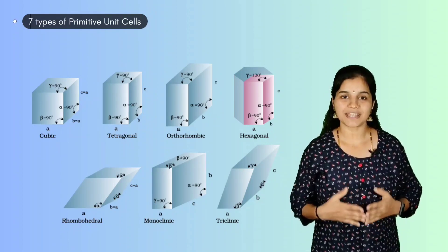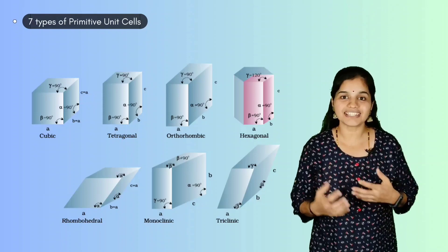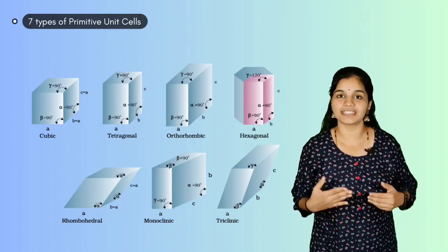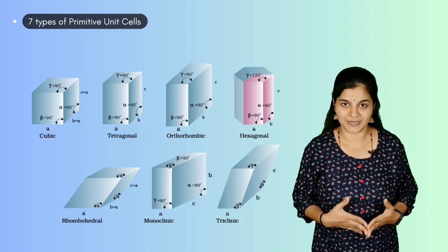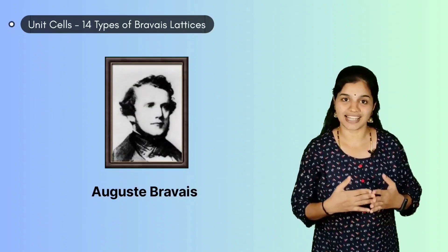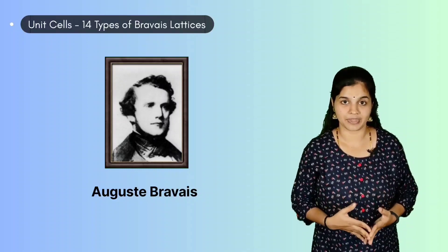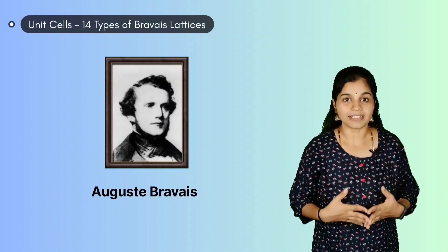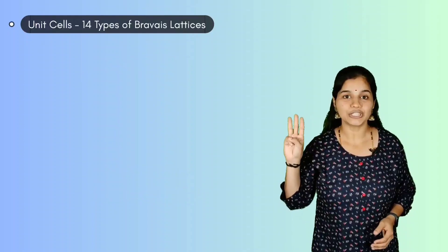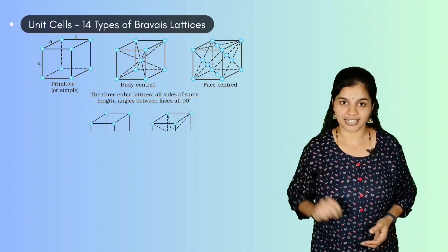These seven primitive unit cells, in combination with different centered unit cells, give us 14 different types of crystal lattices. As already mentioned, these 14 crystal lattices are called Bravais lattices. Among the 14 Bravais lattices, there are three cubic lattices and two tetragonal lattices.